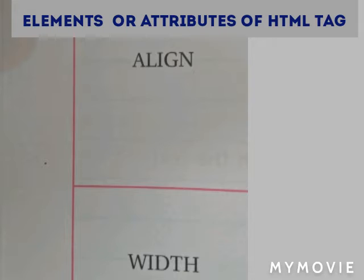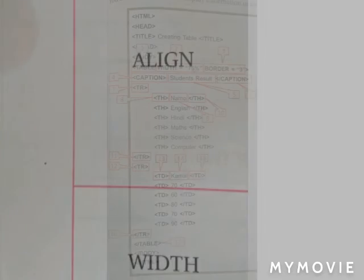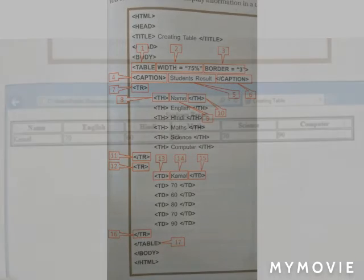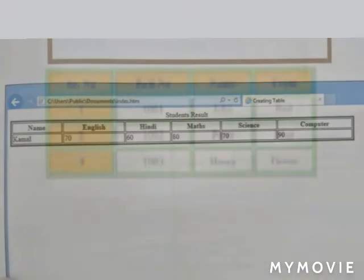Now we can create a table to display the information in a tabular form. The example is given on page number 93 in which we are using the table tag along with the width and border attribute, caption tag, tr, th, and their closing tags. The output of the given code looks like this. Now I am going to implement the table example in our computer.